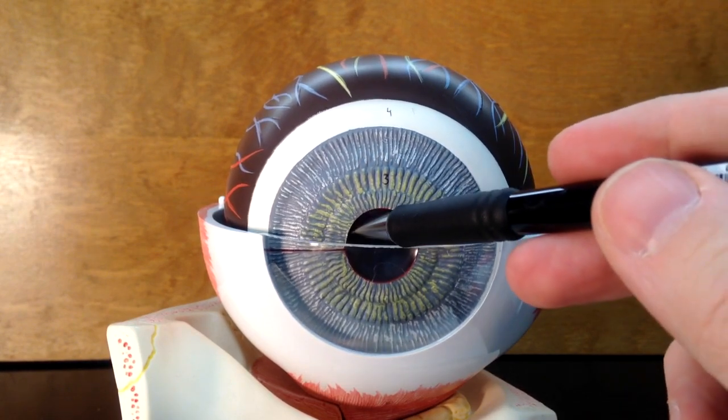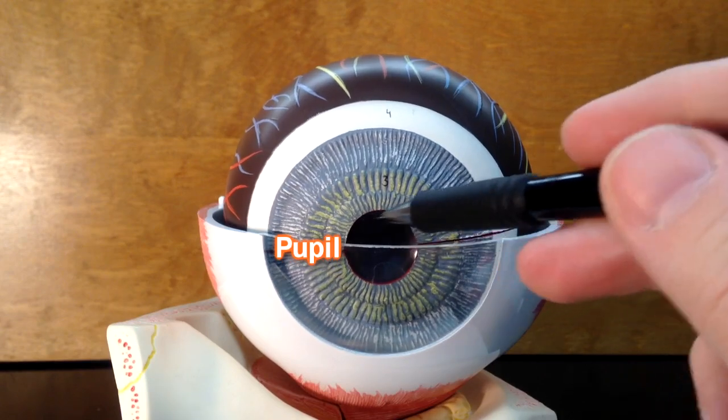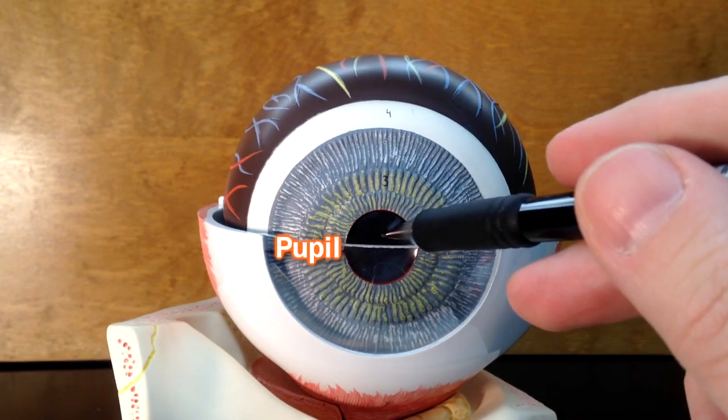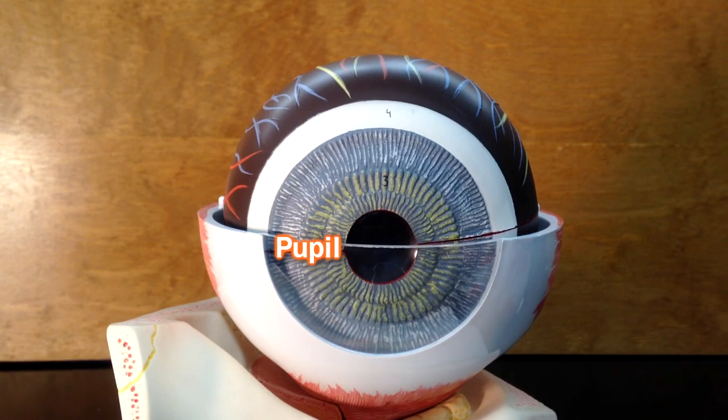There's a little hole in the center of the iris known as the pupil. That pupil is going to allow light rays to pass into the eye so those light rays can hit the photoreceptors in the retina that's in the eye.